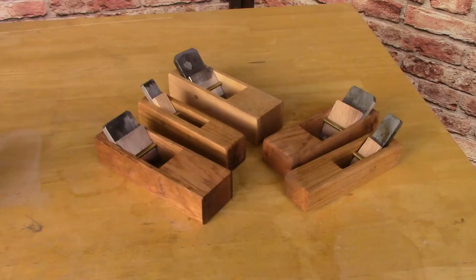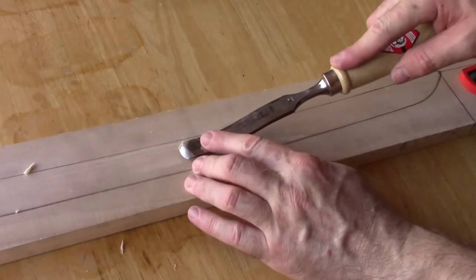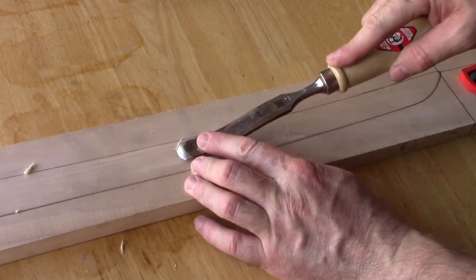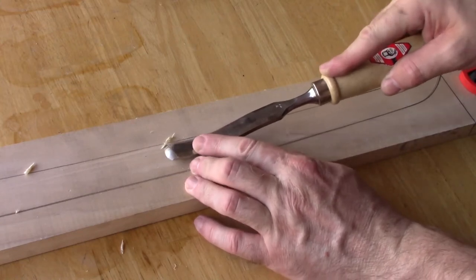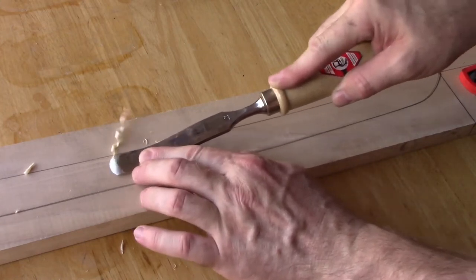This video and my next one will be about making the hand tools I use for making scabbards and handles for Japanese-style swords. For several years after I began making katanas, I felt that my woodworking was clumsy and slow, and my scabbards and handles were clunky and ugly.